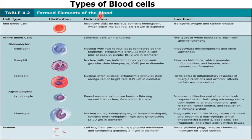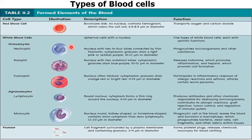Here you can see the different types of blood cells, their structure, and their function. Red blood cells are about 6.5 to 8.5 micrometers in diameter, are biconcave disc-shaped, and do not contain any nucleus. Their main function is to transport oxygen throughout the body. White blood cells are spherical with a nucleus and are further classified into granulocytes and agranulocytes. Neutrophils are granulocytes with a four-lobed nucleus linked by thin filaments, 10 to 12 micrometers in diameter, and they phagocytize microorganisms.